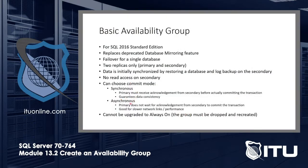If you choose asynchronous commit, the primary does not wait for acknowledgement from the secondary before committing the transaction — it assumes the secondary will be fine. This is good for slower network links or links with poor performance, as it minimizes transaction latency.